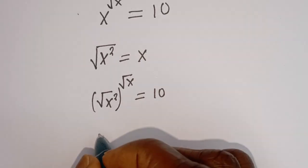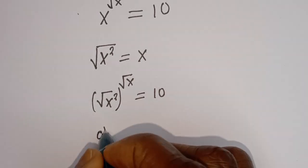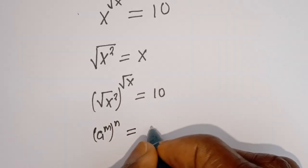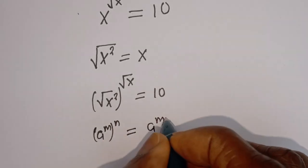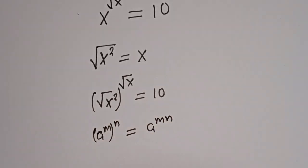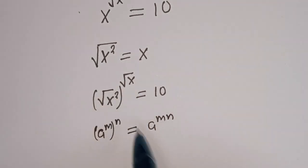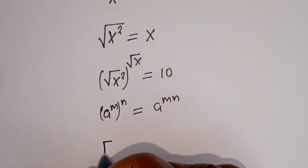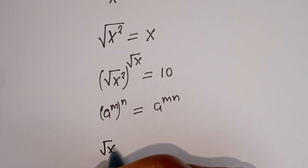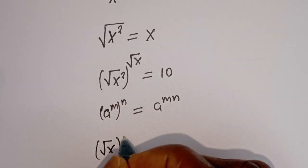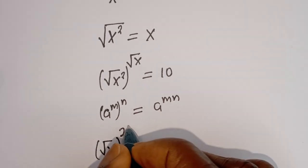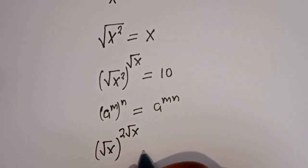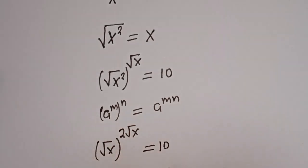Take note that if you have A to the power of M, to the power of N, this is equal to A to the power of M·N. Then this expression can be written as square root of S, to the power of 2·square root of S, equals 10.